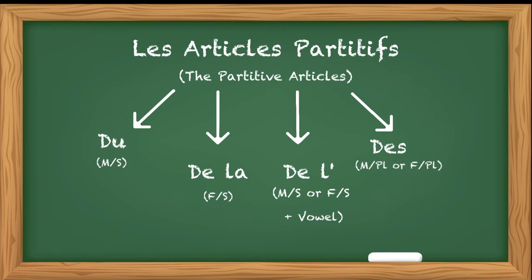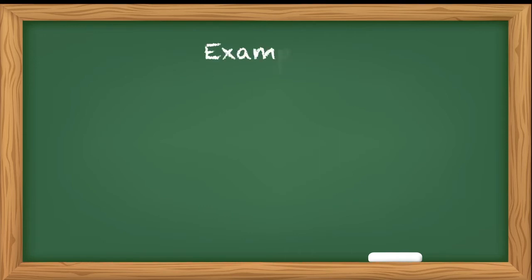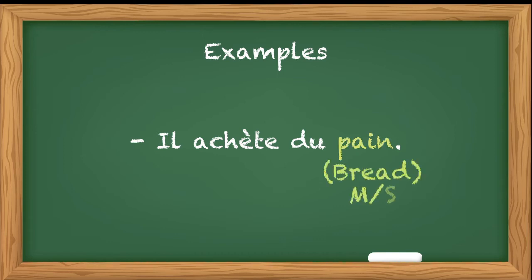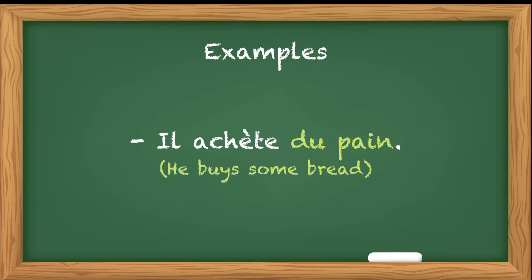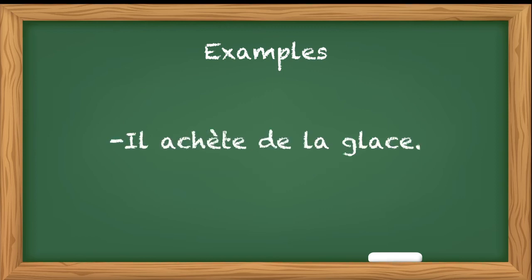Let's understand them by examples. Il achète du pain. Now here pain is bread. Bread is masculine in French, so le pain. When we have to write partitive article, we will use du. Il achète du pain - he buys some bread.